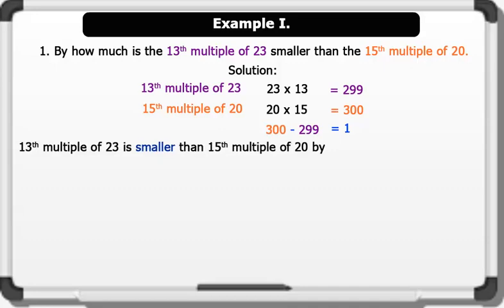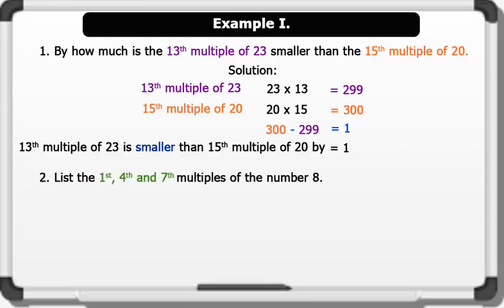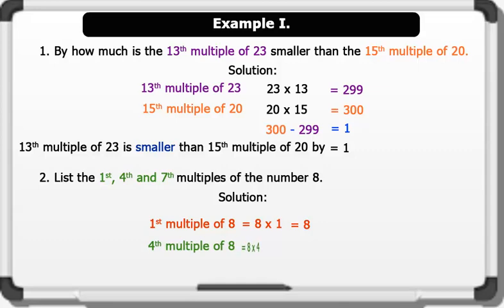Since the 13th multiple of 23 is smaller, 300 minus 299 equals 1. That is to say the 13th multiple of 23 is smaller than the 15th multiple of 20 by 1. Example 2: List the first, fourth, and seventh multiples of 8. Solution: first multiple of 8 is 8 × 1 = 8; fourth multiple of 8 is 8 × 4 = 32; seventh multiple of 8 is 8 × 7 = 56. That's brilliant!